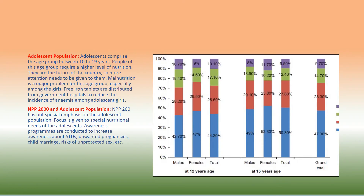Adolescent population: adolescents comprise the age group between 10 to 19 years and require a higher level of nutrition. They are the future of the country, so more attention needs to be given to them. Malnutrition is a major problem for this age group, especially among girls. Free iron tablets are distributed from government hospitals to reduce the incidence of anemia among adolescent girls. NPP 2000 has put special emphasis on the adolescent population, focusing on nutritional needs and conducting awareness programs about STDs, unwanted pregnancies, child marriage, and risks of unprotected sex.